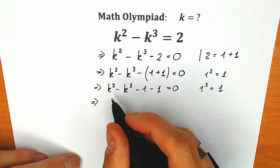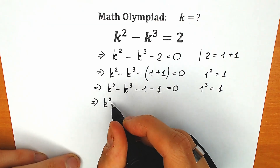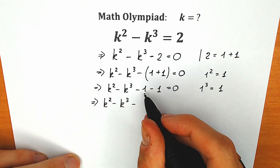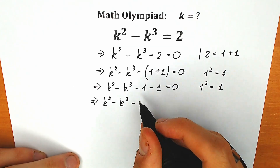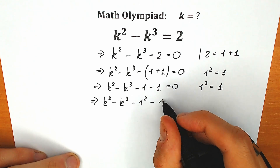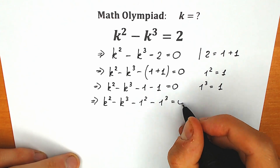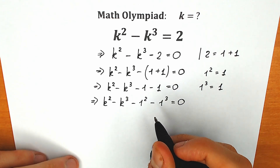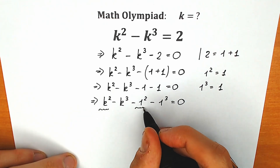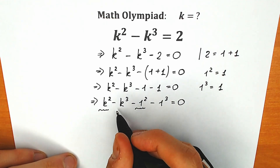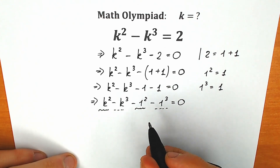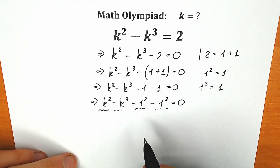We can write one 1 as 1 squared, and the other 1 as 1 cubed. So 1 cubed equals 1 and 1 squared equals 1. Why do we change 1 to 1 squared and 1 cubed? Because we have k squared, so we can group k squared with 1 squared, and k cubed with 1 cubed, and then apply the difference of squares and sum of cubes formulas. So we have k squared minus k cubed, minus 1 squared, minus 1 cubed. We have two pairs: squares and cubes.